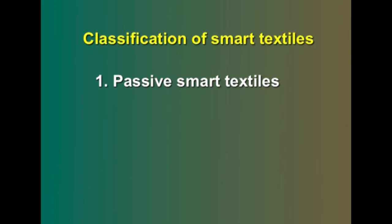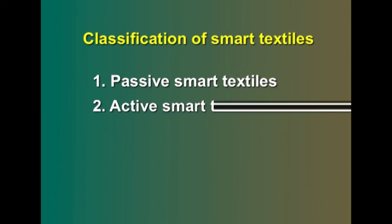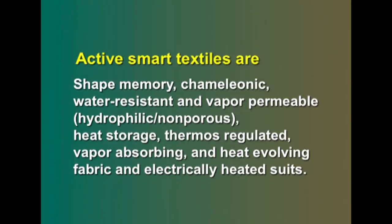Smart textiles are classified into three generations. Passive smart textiles, the first generation, are only able to sense the environment or user based on sensors. Active smart textiles, the second generation, have both actuators and sensors and adapt their functionality to changing environments automatically. Active smart textiles include shape memory, chameleonic, water-resistant and vapor-permeable, hydrophilic, heat-storage, thermoregulated, vapor-absorbing, heat-evolving fabrics, and electrically heated suits.